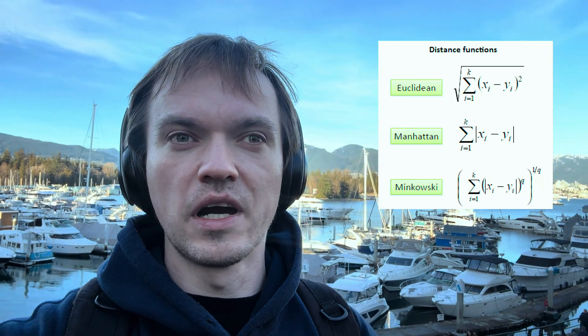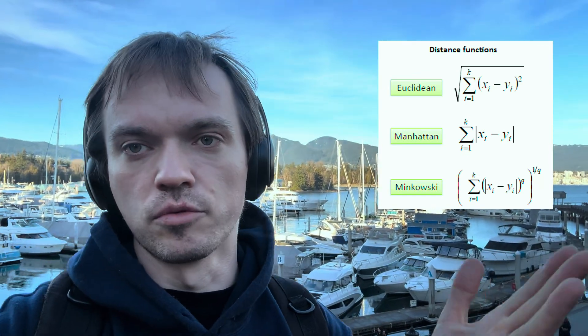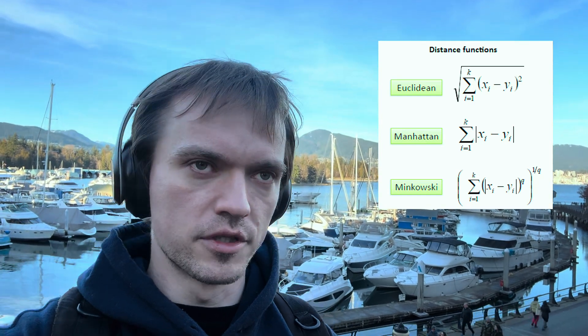We can define a distance function based on some norm — let's take the Euclidean norm. You have an algebraic variety, you have a point outside of the algebraic variety, you pick your norm, you have the distance function, and what you want to do is minimize this distance, so you want to find the critical points.